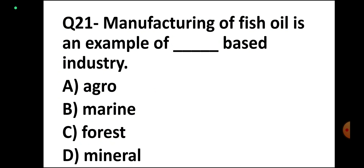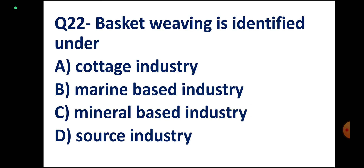Question number 21. Manufacturing of fish oil is an example of DASH based industry. Options: Agro based, Marine based, Forest based, Mineral based. Correct answer: Marine based.